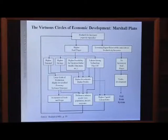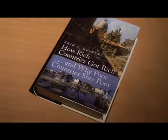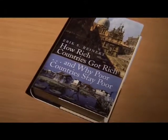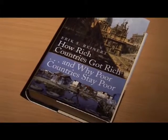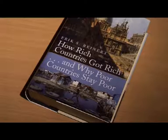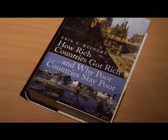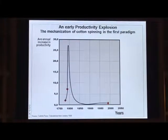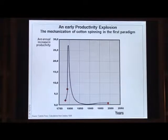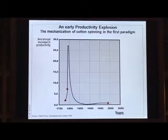My claim is that premature integration into world trade and shock therapy has created Morgenthau Plan conditions in many poor countries, from Mongolia via Africa to many South American countries. If I were to draw a picture of economic development, it would look like this: economic development consists of sequences of productivity explosions, periods where there is a very rapid productivity increase in one or very few economic activities.